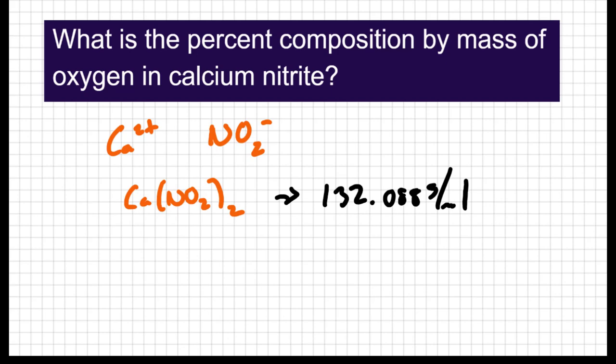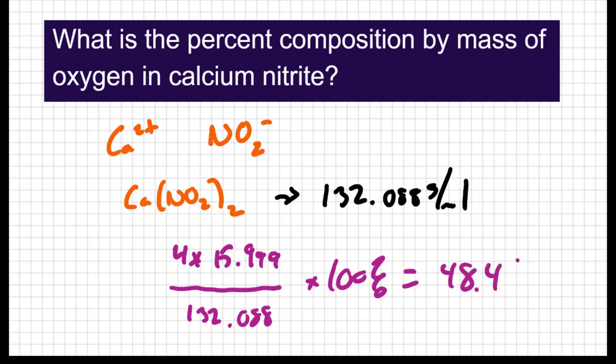The question just wants the oxygen. So if I'm going to find the molar mass of oxygen, I'm going to take the mass of oxygen present. Now not just one oxygen, all of the oxygen. So in this case, I have four oxygens, so that's going to be four times 15.999, and I'm going to divide that by the total, which we just said is 132.088, turn that into a percentage, and for oxygen, I get 48.4% of the calcium nitrite is oxygen.